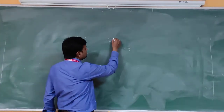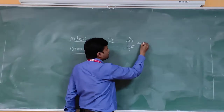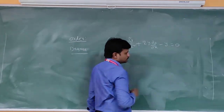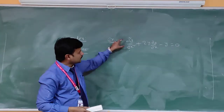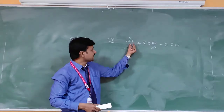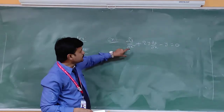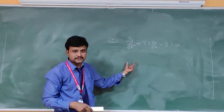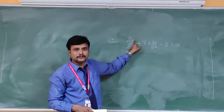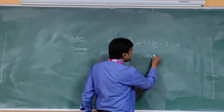For example, d²y/dx² plus 2y dy/dx minus y is equal to 0. Here, what is the highest derivative in this differential equation? The second derivative is the highest derivative. So if the nth derivative is the highest derivative, then order is equal to n. For this example, the second derivative is the highest derivative, so the order of this differential equation is 2.